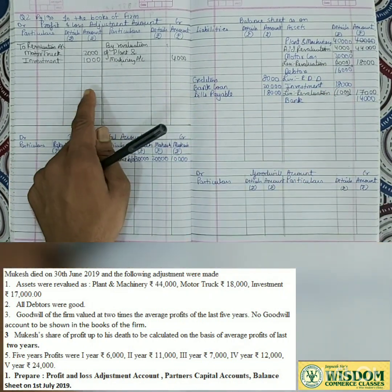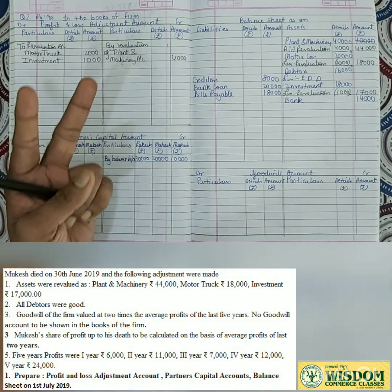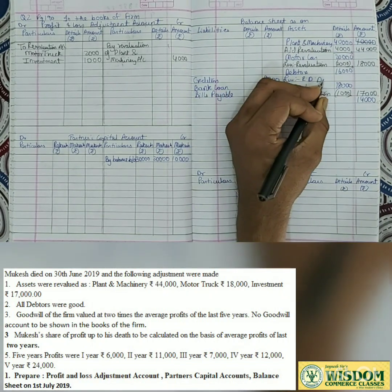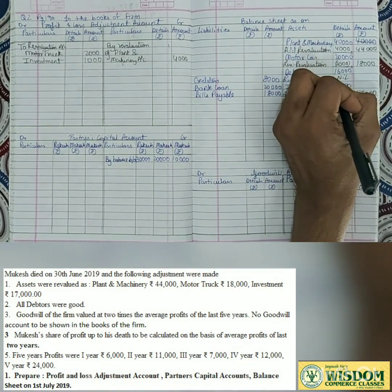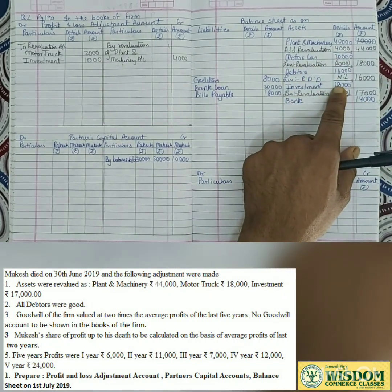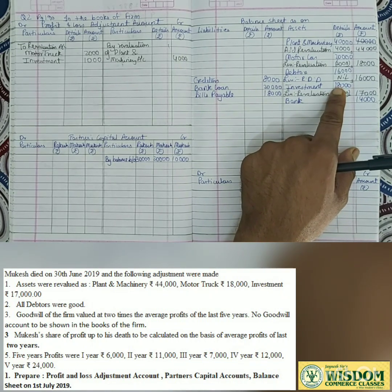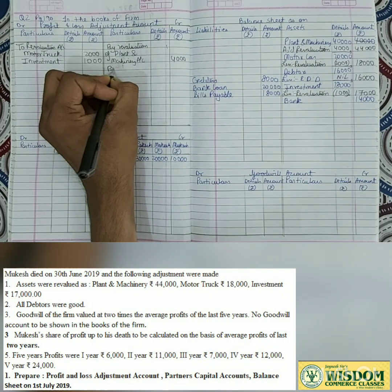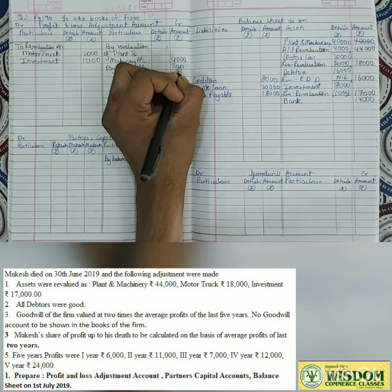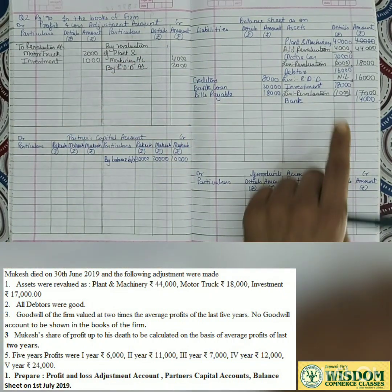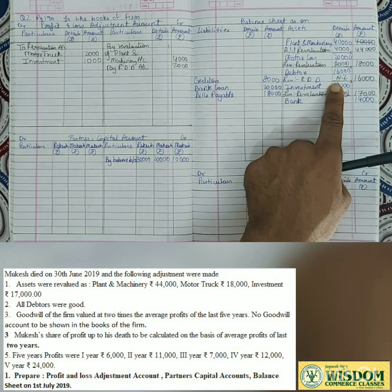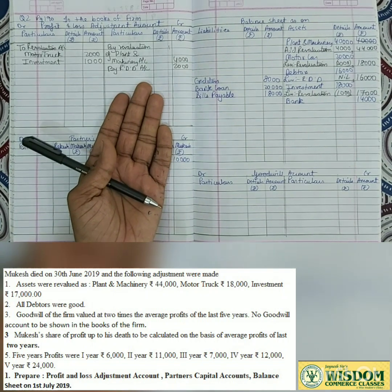All adjustments have 2 effects. Second adjustment: all debtors' data were good, so we make RDD Nil. We had expected a loss of 2,000 rupees, but since no loss occurred, it is good news. Credit side of P&L adjustment: 2,000 rupees - 'credit all incomes and gains'. We assumed RDD would be 2,000 but no loss happened, so credit side.